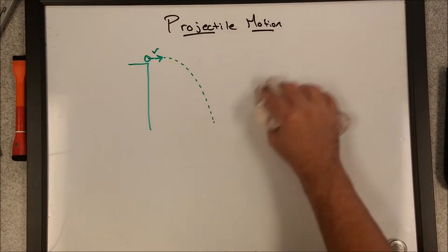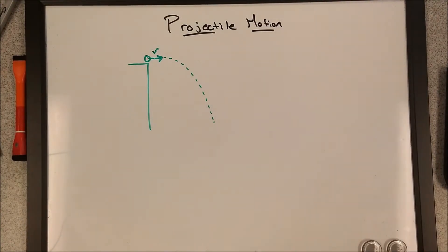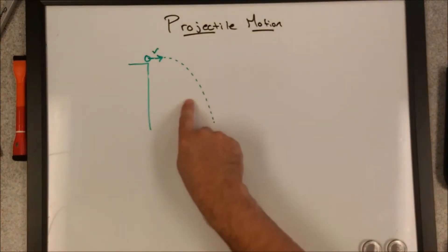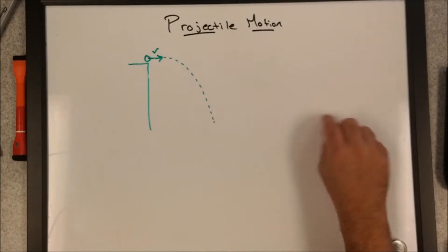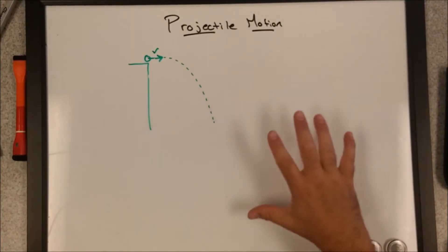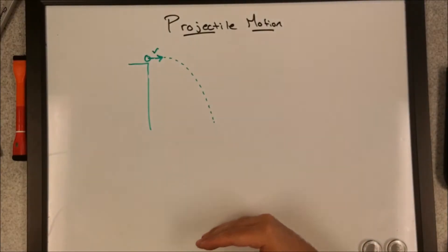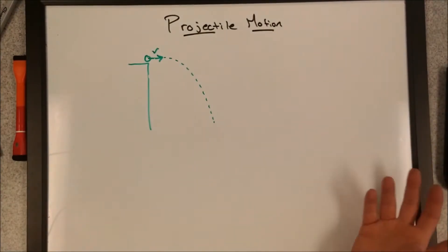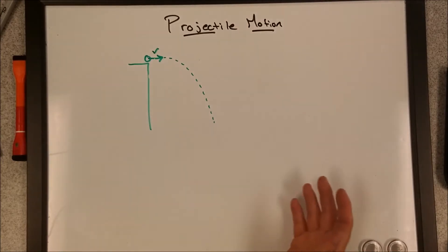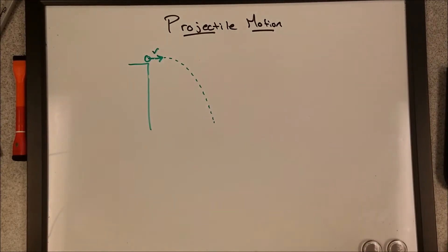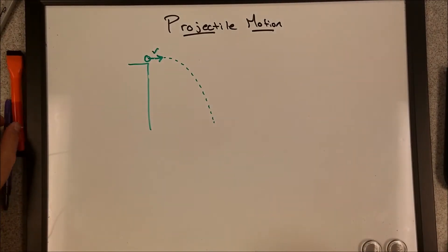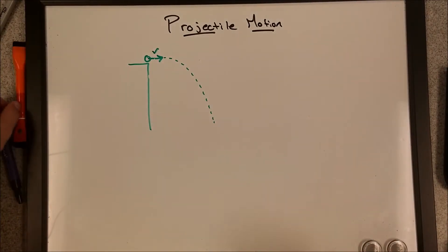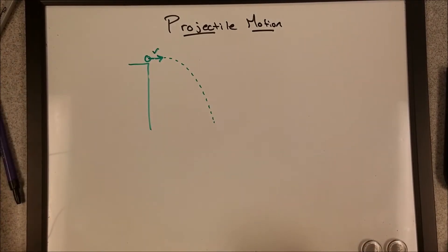Another thing to understand is the path in which the projectile travels, even with the angle, is always referred to as a parabolic path. And that makes sense — it looks like a parabola. Don't overthink it. It's a parabolic path. That's it.